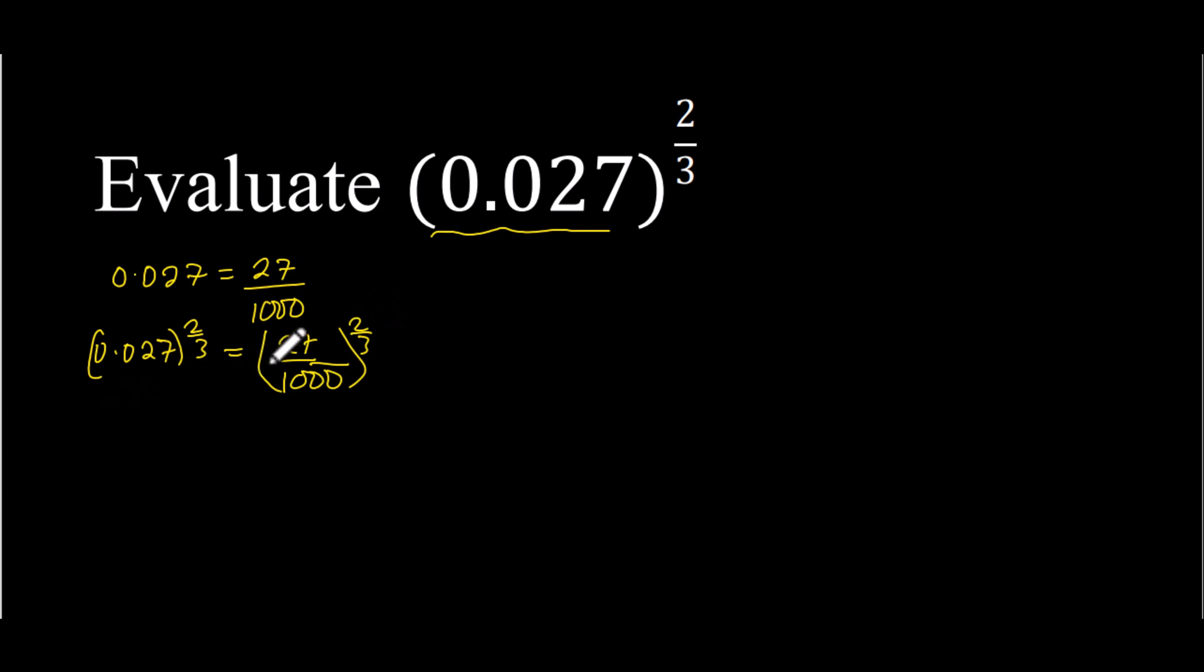Now I'm going to convert 27 and 1000 such that they will have exponents which will be the same as the denominator of this fraction.